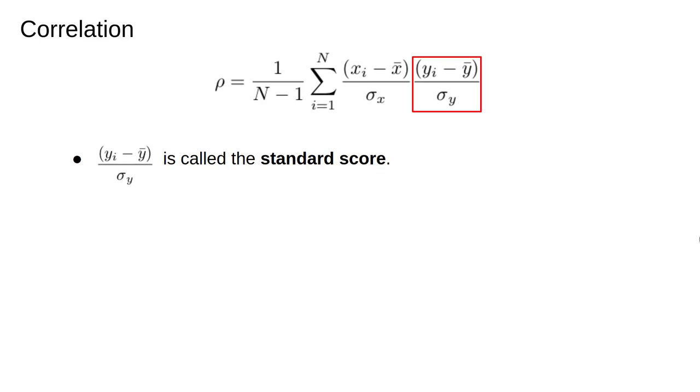The term yi minus y bar over sigma y is called a standard score. It measures the deviation of a data point from the mean, divided by the expected deviation, sigma. Using standard scores puts both data sets on the same footing.